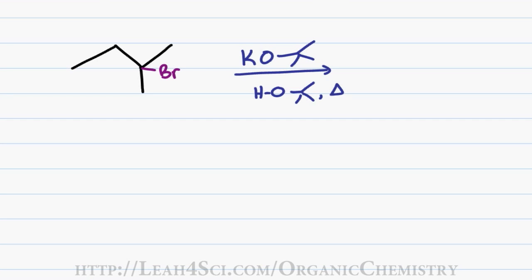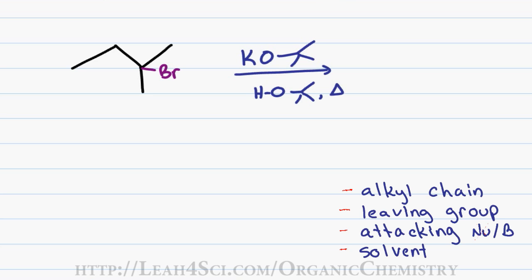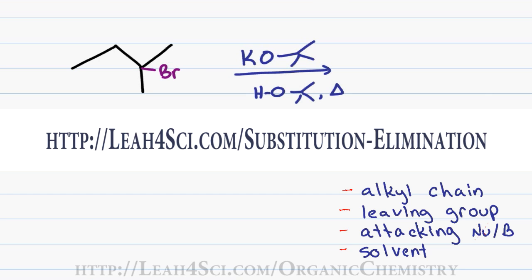Let's see how this affects the E2 reaction by analyzing what happens when 2-bromo-2-methylbutane reacts with potassium tert-butoxide in a heated solution of tert-butanol. Let's verify that an E2 reaction can take place by looking at the four-part checklist that I use to analyze all substitution and elimination reactions. To see detailed videos explaining each of these concepts, visit my website leah4sci.com/substitution-elimination.